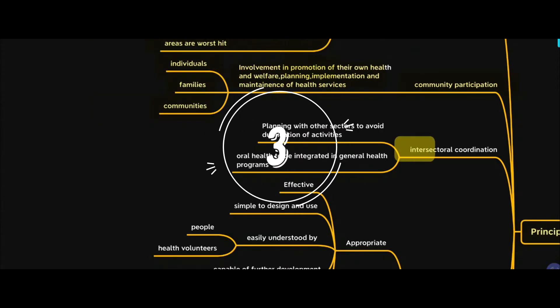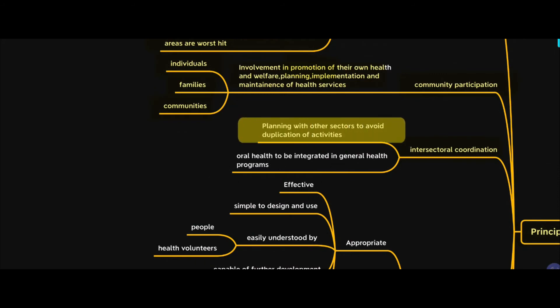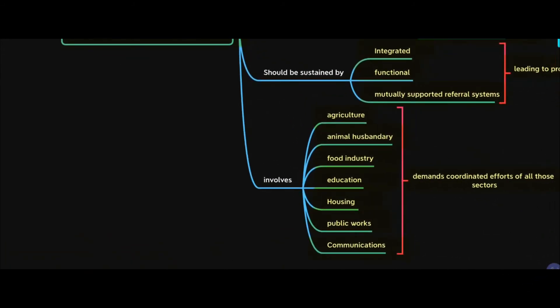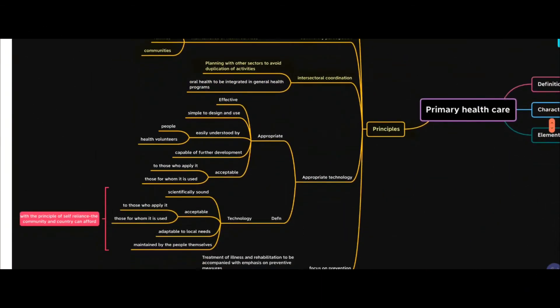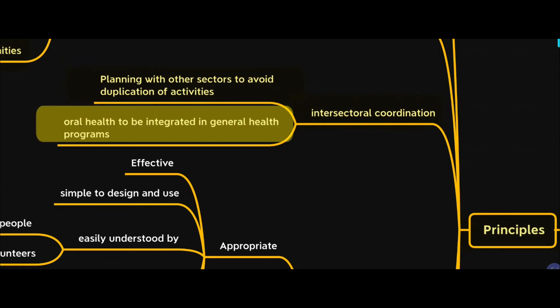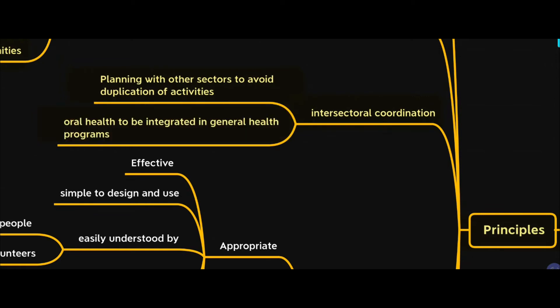The third principle is intersectoral coordination, which says there should be planning with other sectors to avoid duplication of services. As mentioned in the Alma-Ata Declaration's characteristics, sectors like agriculture, animal husbandry, food, communication, and housing are involved in the functioning of primary health care. There should also be coordination within the health sector — for example, oral health should be integrated into general health programs — to help avoid duplication of activities.